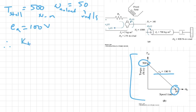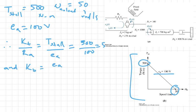Therefore, our K_T over R_A, which we know to be T_stall over E_A, will give us 500 over 100 which equals 5. So we know K_T over R_A. And then our K_B will be E_A over omega_no_load, which equals 100 over 50, so this equals 2.